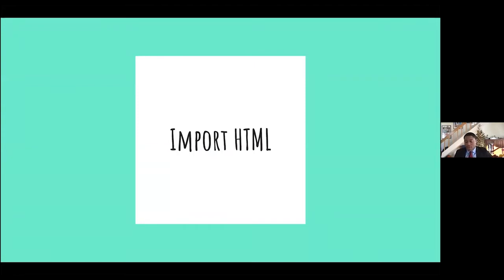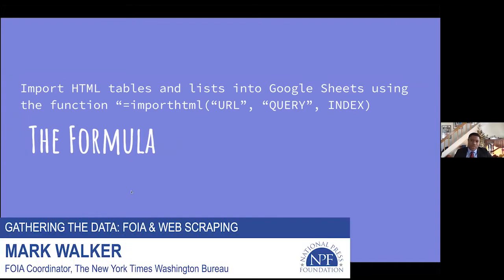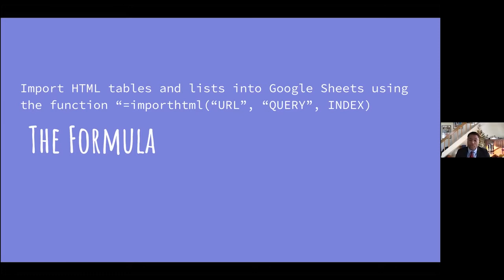The first formula we're going to talk about, and the one I use most frequently, is called ImportHTML. This only works with Google Sheets — it does not work with Excel. It's a formula that examines the position of a table or list inside a website's HTML and imports it into a Google spreadsheet in a clean, concise, ready-to-use format. The formula starts with an equals sign, then you type ImportHTML. One caution: Google Sheets likes to take guesses, so do everything manually and don't let it auto-complete for you.